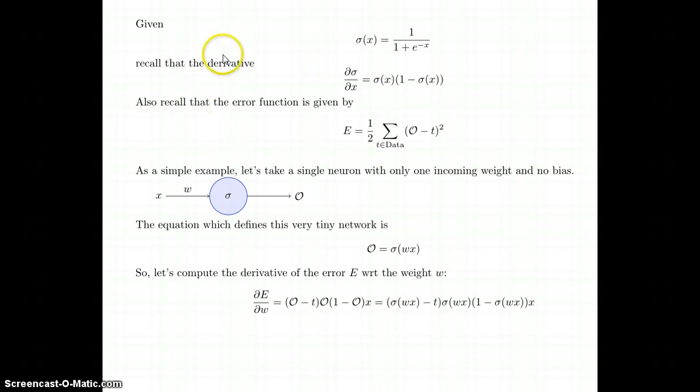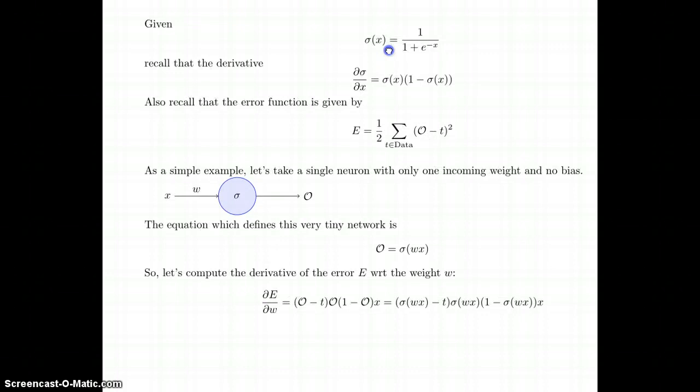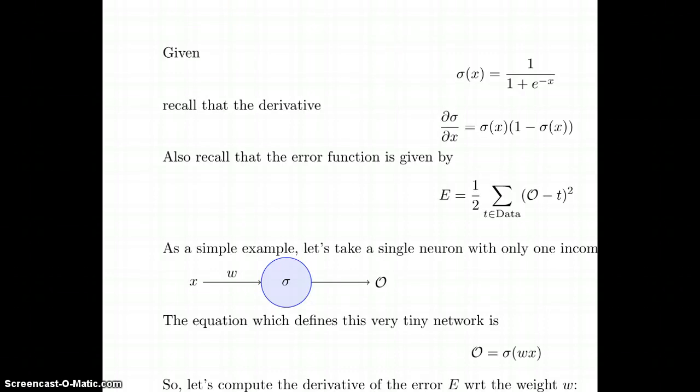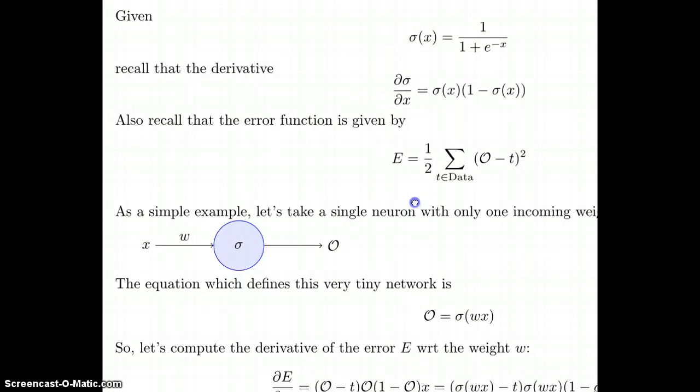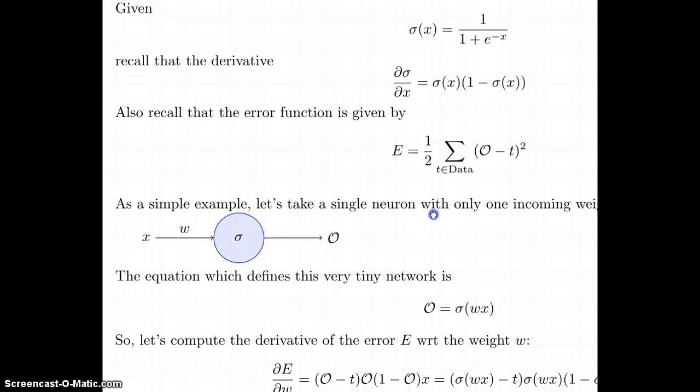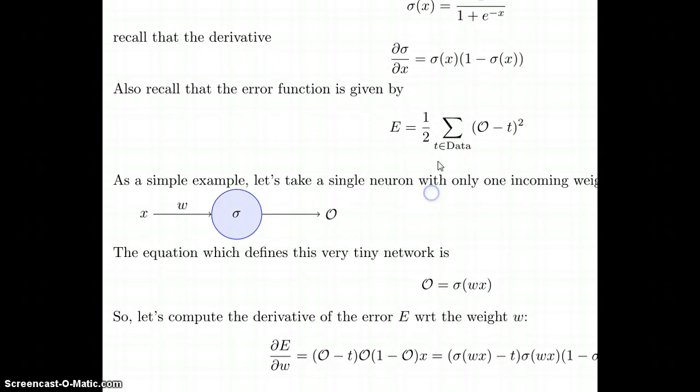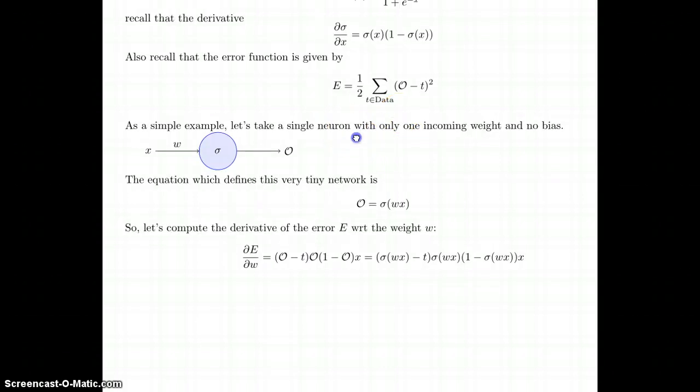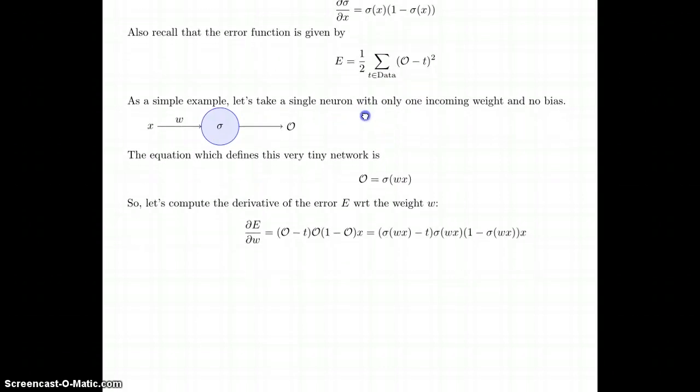This is the standard example. We have our transfer function sigma, which is just the regular 1 over 1 plus e to the negative x. Recall that the derivative of that is just sigma times 1 minus sigma. Also recall the error function that we have. This error is 1/2 the sum across all the data points of the difference between the output and the target value quantity squared.